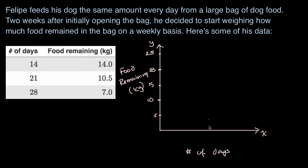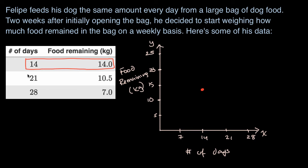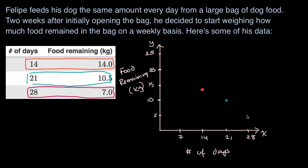We want to go up to 28 days, and they're measuring everything on a weekly basis. So let's say this is 7, 14, 21, and then 28. They gave us some data points: after 14 days, there's 14 kilograms remaining. After 21 days, there's 10 and a half kilograms remaining — right about there. After 28 days, there's seven kilograms remaining.